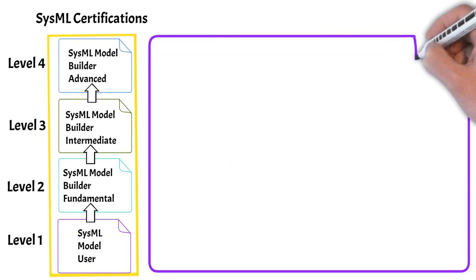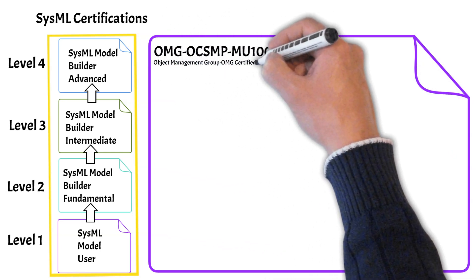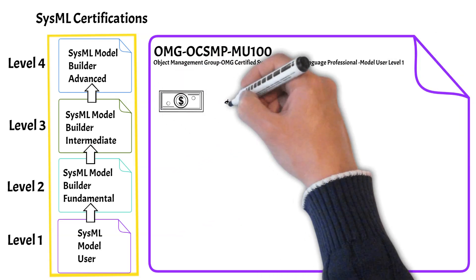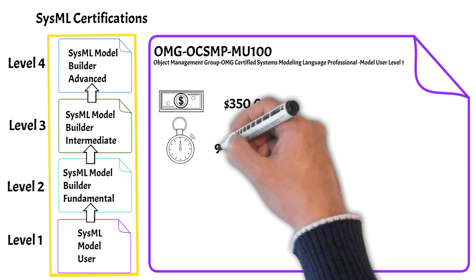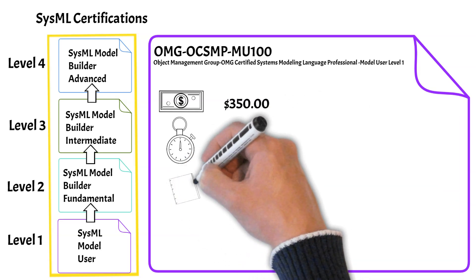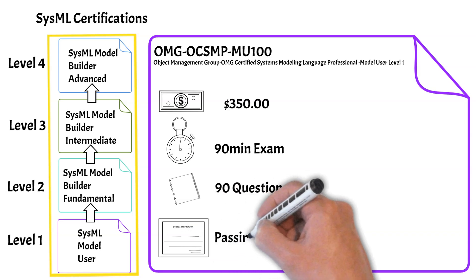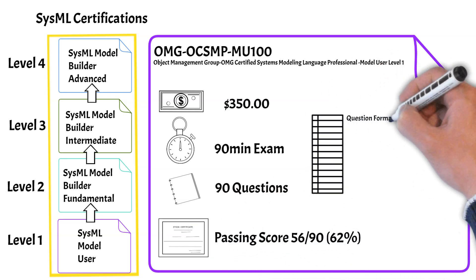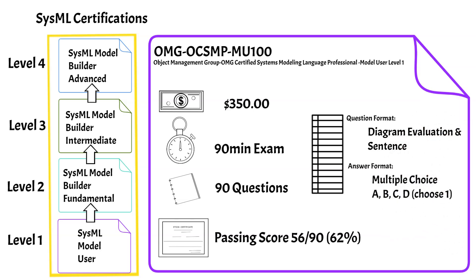We'll start by looking into the details of the level one exam, the Model User exam. This exam costs $350. It's a 90-minute exam with 90 questions — one minute per question. You need a 62% to pass, and the question format includes diagram evaluation as well as small sentences, with multiple choice answers.